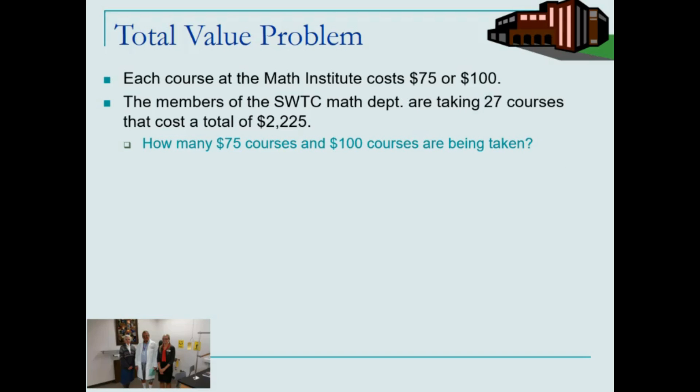When we have two variables we have to generate two equations. One equation will come using the fact that there are a total of 27 courses. The number of each course adds up to be 27.